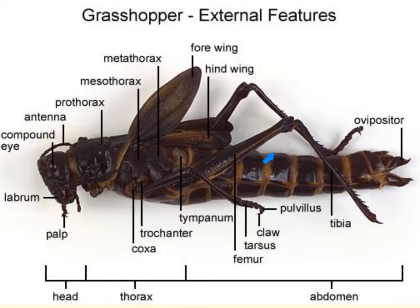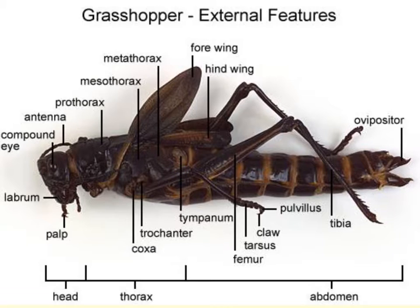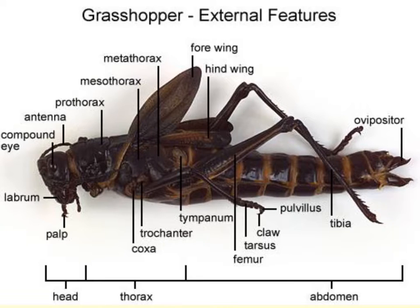Here we can see the abdomen region. The first segment of the abdomen fuses with the metathorax and is modified for reproduction. A key feature here is the tympanum, which is the auditory organ. Also along this area, you'll notice very small pores, which are openings of the tracheal system called spiracles. It is this system that allows air tubes to bring oxygen directly to the body cells.